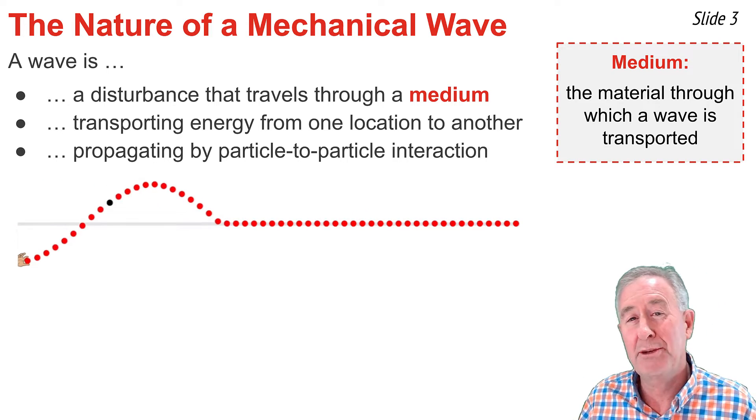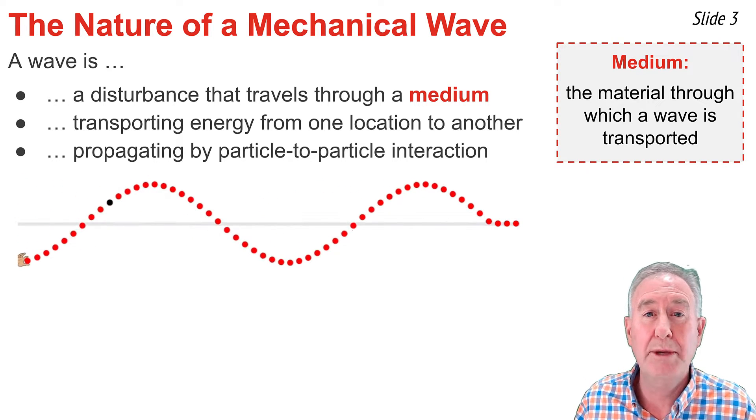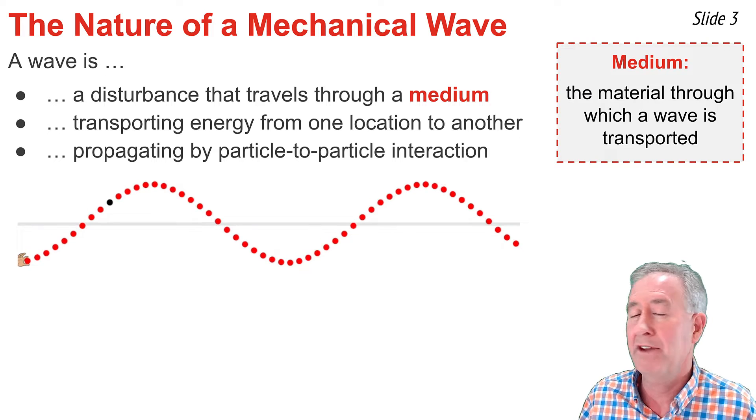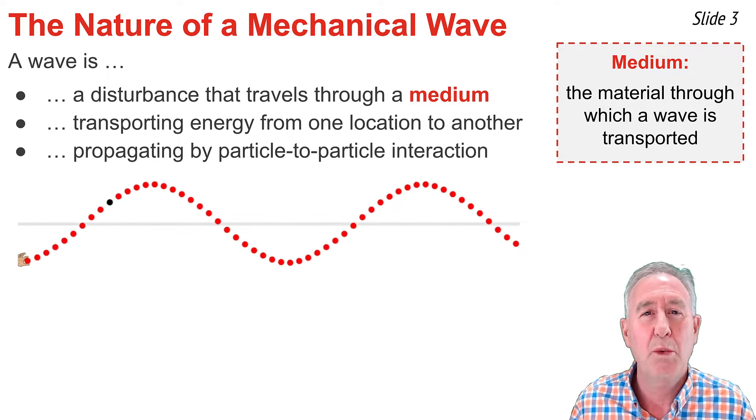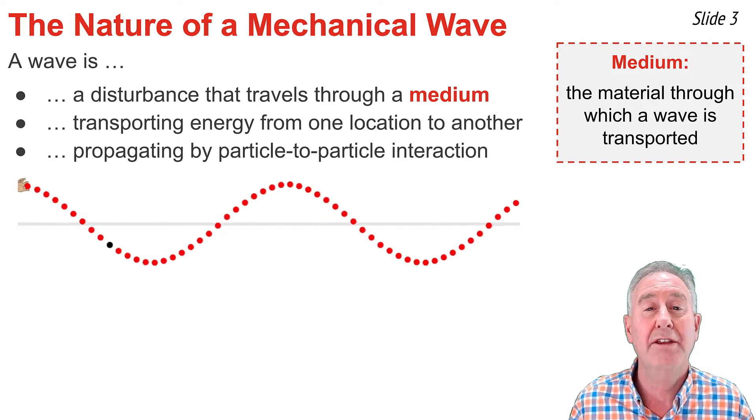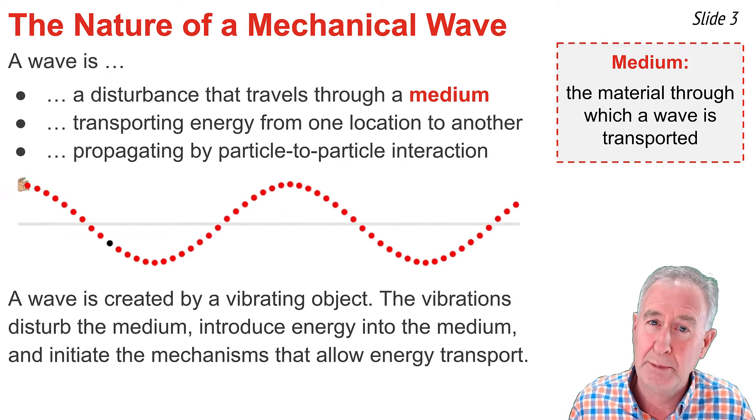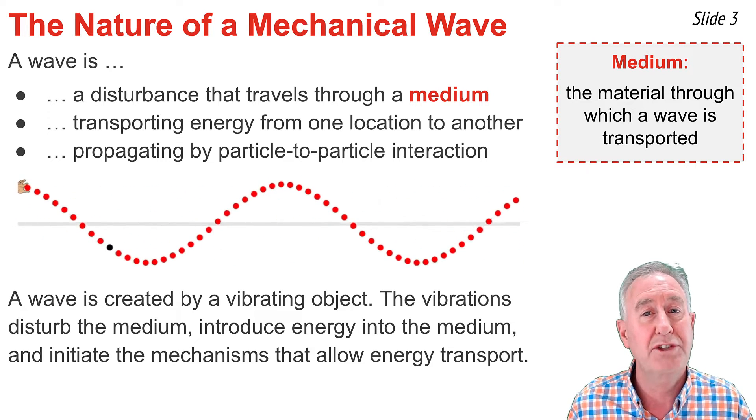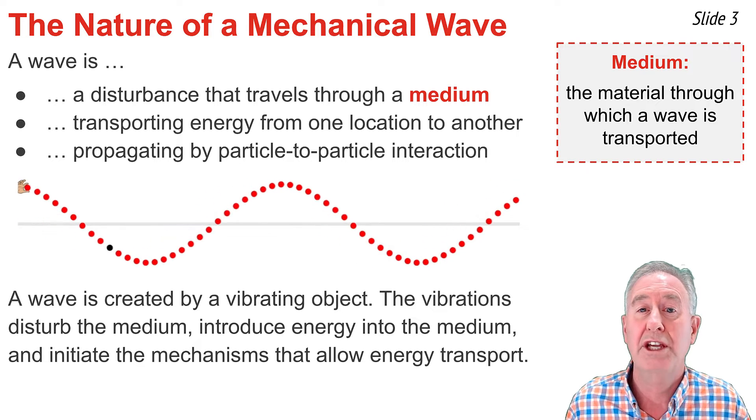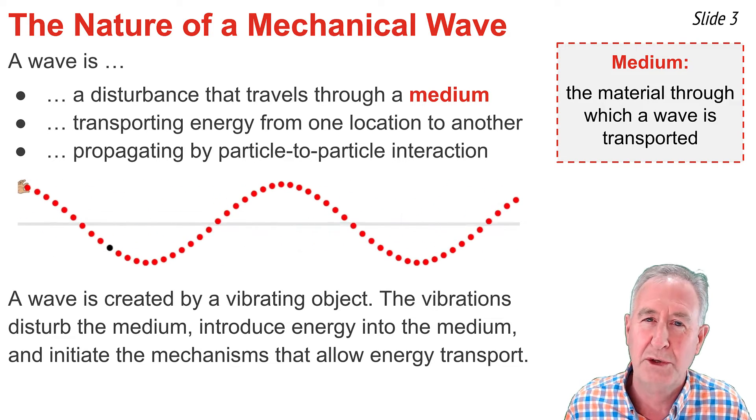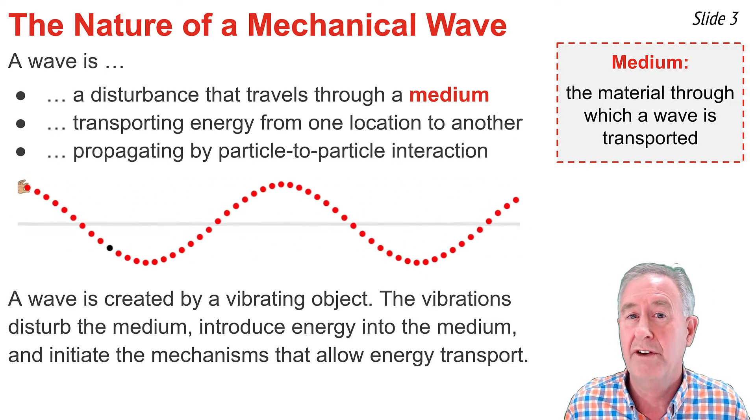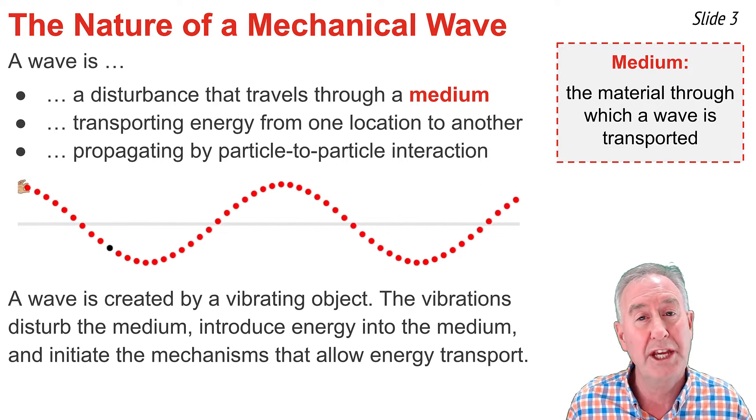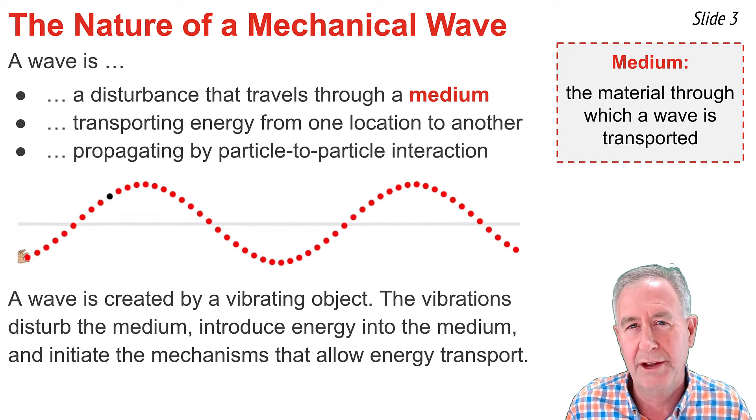In this animation, the medium is a rope, and the rope is being represented by a collection of interacting particles. A wave can be introduced into the medium by vibrating the first particle up and down repeatedly. These vibrations disturb the medium and introduce energy into the medium at the hand's location. It also sets off a collection of mechanisms by which energy is transported from one location to another.